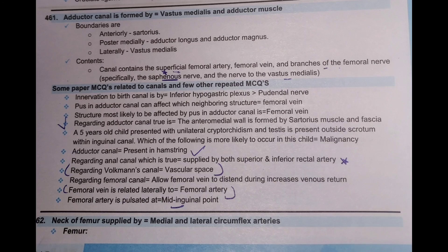Regarding a clinical question: pus in the adductor canal can affect which neighboring structure? The structure most likely to be affected by pus in the adductor canal is the femoral vein.